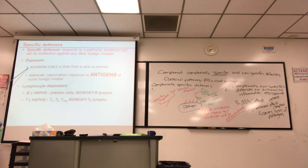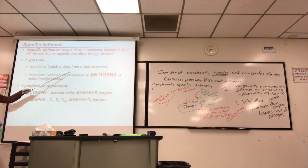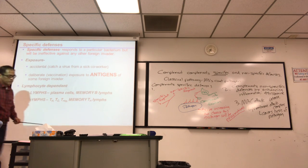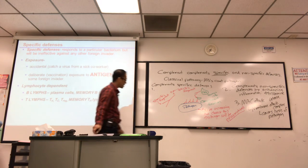So it requires exposure, either accidental or deliberate. Say for example, someone sneezes on you, or deliberate, you go to the clinic to get vaccinated for your flu shot or anything else, whooping cough, pneumonia if you're elderly. And so it's lymphocyte-dependent, this mechanism, and you get the B's and the T's. And there's all these different subpopulations of the B's and the T's I should define.